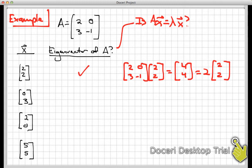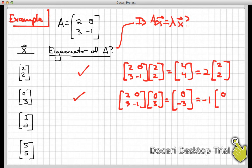(0,3) was also an eigenvector of A because if I take [2, 0, 3, -1], times (0,3), then we found that we got (0,-3). And, of course, that is a scalar times the original vector. The lambda, in this case, would be minus 1.